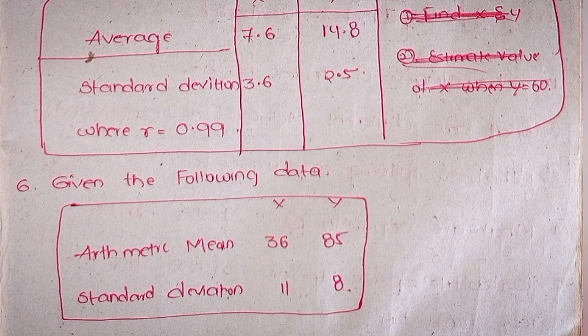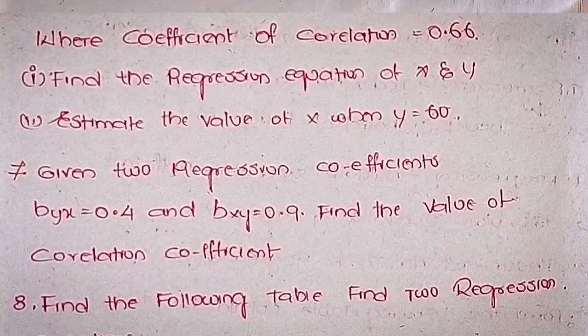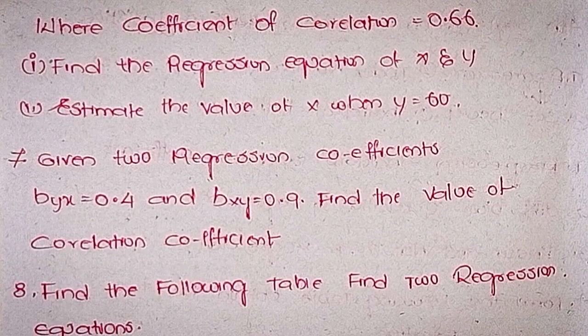Sixthly, given the following data: arithmetic mean x = 36, y = 85. Standard deviation of x = 11, y = 8, where coefficient of correlation = 0.66. Firstly, find the regression equation of x and y. Secondly, estimate the value of x when y = 60.